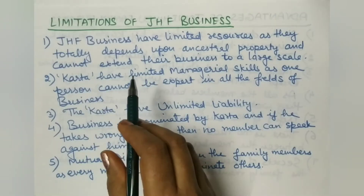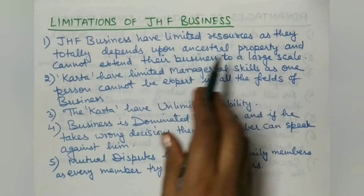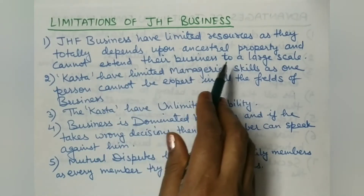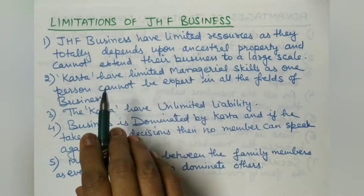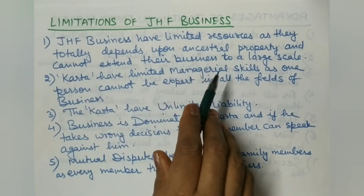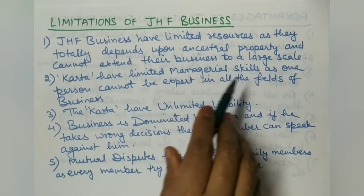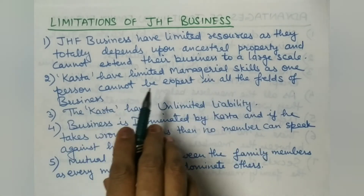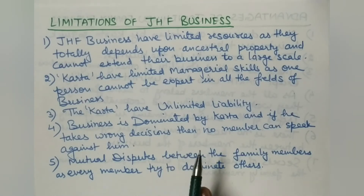Now let us discuss the limitations of Joint Hindu Family Business. One limitation is limited resources, as the business totally depends upon the ancestral property and cannot extend to a large scale. The only property used is what belongs to the family.